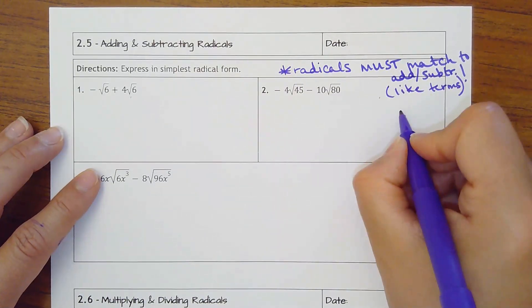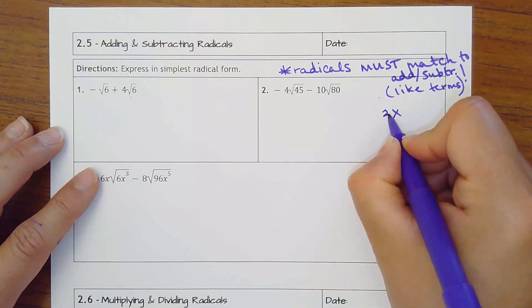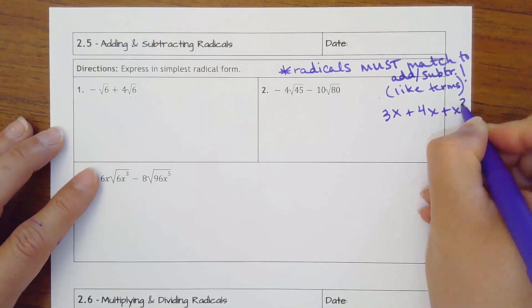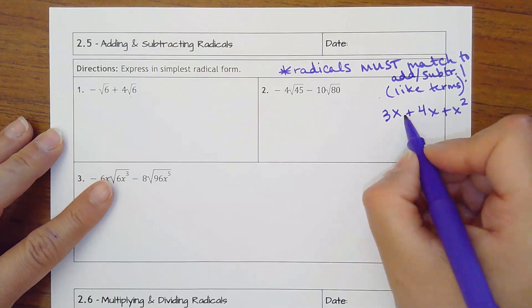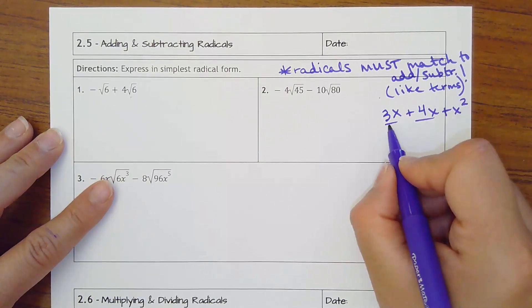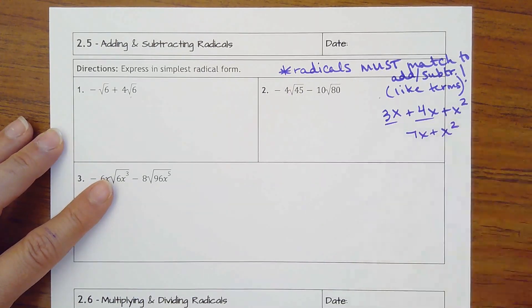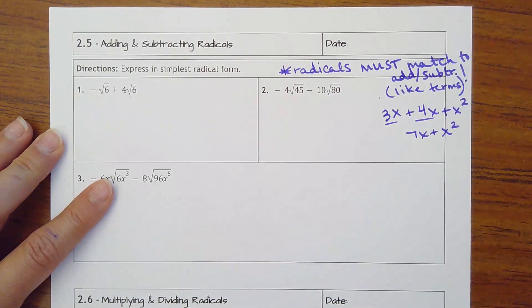So that means they must be like terms. Let's take, for instance, an expression like 3x plus 4x plus x squared. If I said simplify this, you would put together the 3x plus the 4x. That would make 7x. But you can't add an x to an x squared. The same thing happens with radicals.